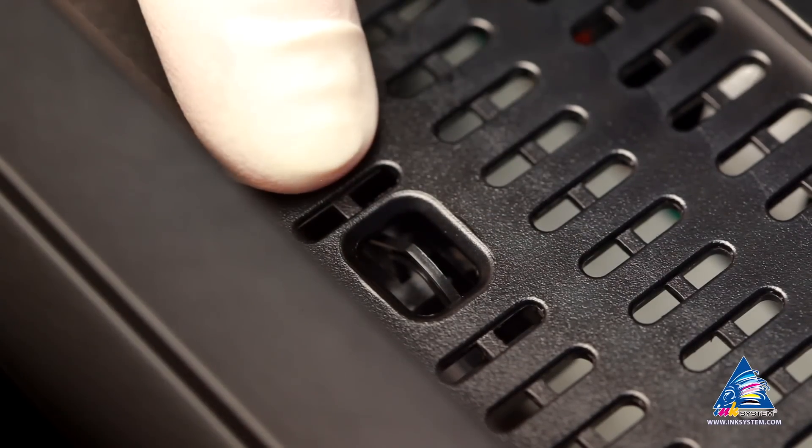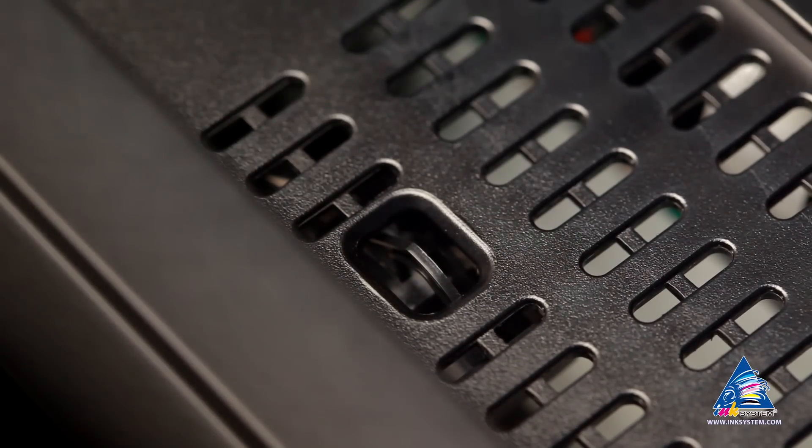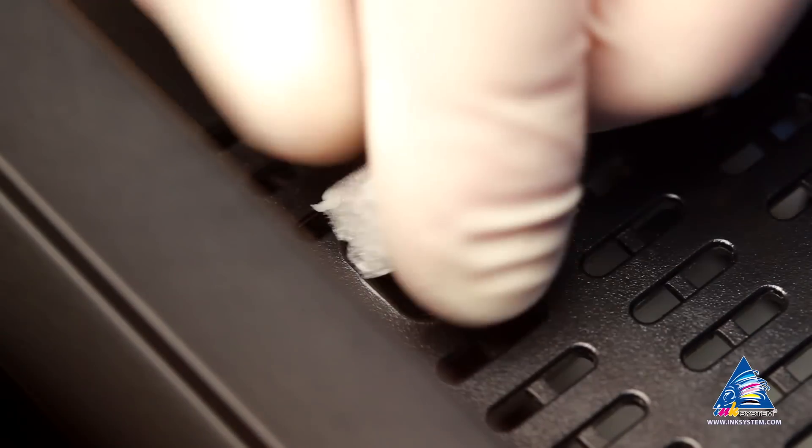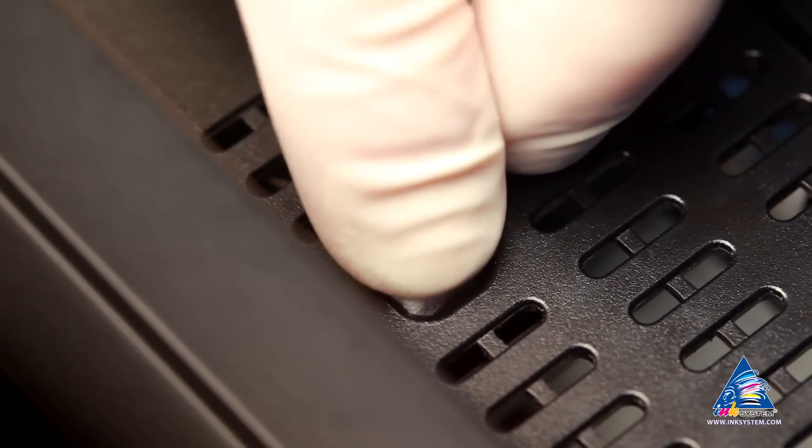There is a lid sensor on the body of the printer that must be blocked either with a piece of styrofoam that is in the set with printer or with the help of scotch tape.